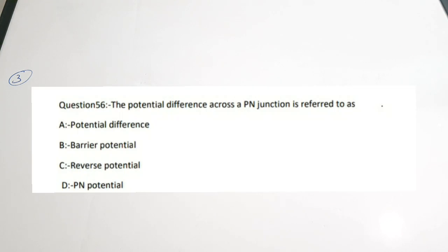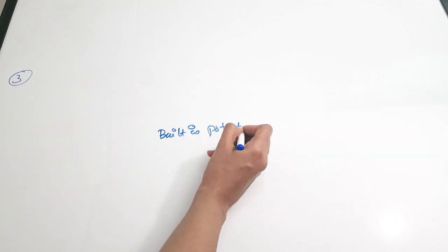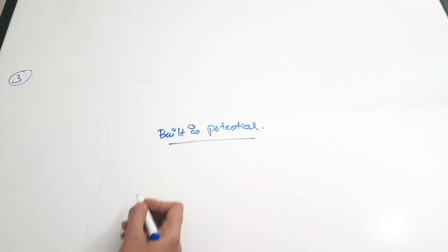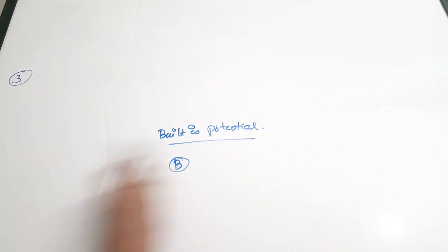Third question: the potential difference across a PN junction is referred to as dash. Options: A) potential difference, B) barrier potential, C) reverse potential, D) PN potential. The correct answer is barrier potential — also sometimes called built-in potential. These terms are used interchangeably. Correct answer is option B.